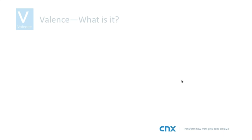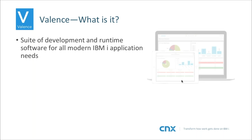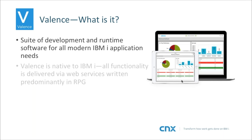I'm going to go over just some very high-level slides before we actually do a live demo of creating an app. For those of you who haven't seen Valence before, it's basically a suite of development and runtime software for all modern IBM i application needs. That's a pretty broad statement, and it is very broad functionality overall. We're going to really just focus on the Nitro App Builder today.